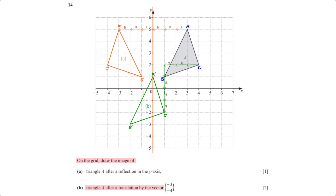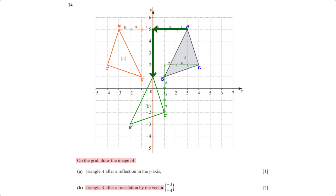On the grid, draw the image of triangle A after a translation by the vector (−3, −4). The translation vector means we move each vertex 3 units to the left and 4 units downwards. The movement for point C is shown on the diagram. After repeating the process for all other points, we map out the translated image of triangle A.